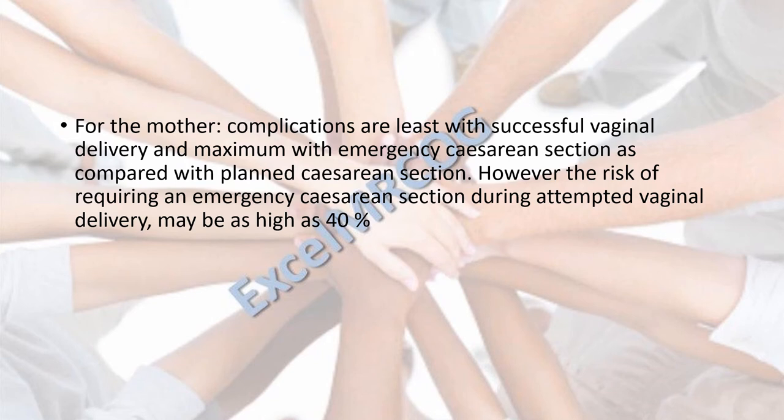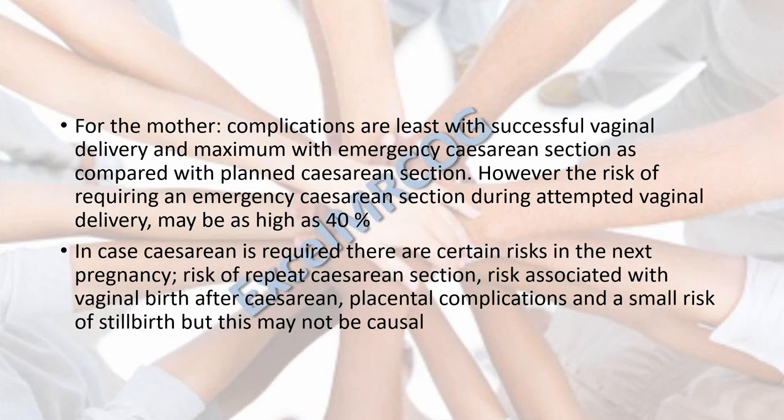For the mother, complications are least with a successful vaginal delivery and maximum if an emergency cesarean section is required, compared with a planned cesarean section. However, the risk of requiring an emergency section during attempted vaginal delivery may be as high as 40% — that is, 4 out of 10 may require a cesarean. If cesarean is required, there are certain risks in the next pregnancy, including risk of repeat cesarean, vaginal birth after cesarean, placental complications, and a small risk of stillbirth, though this association may not be causal. Cesarean section also carries its own surgical risks.